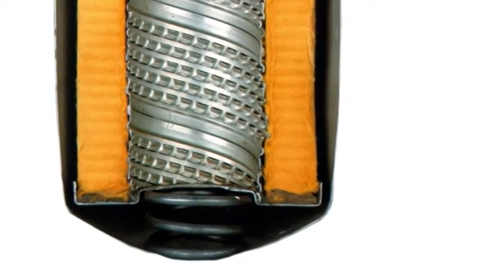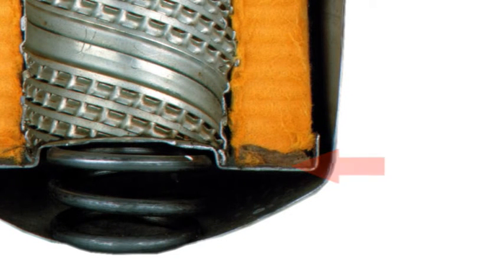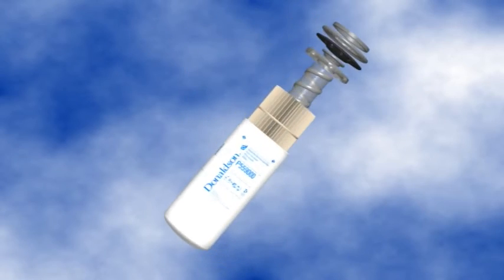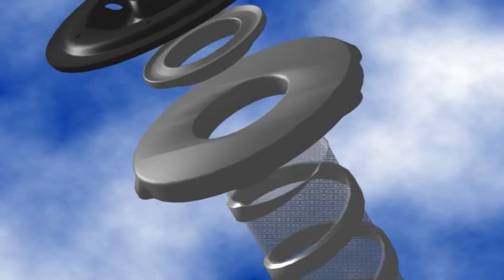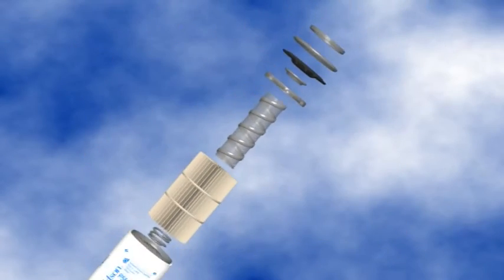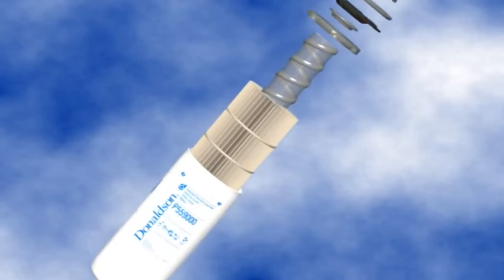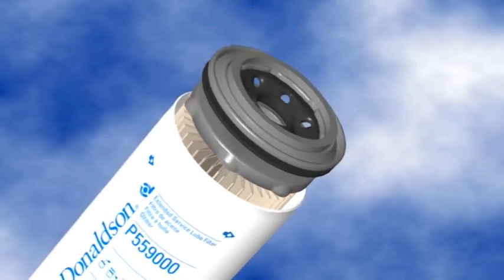Another no-leak precaution is the tab on the top end cap of the filter element. These tabs prevent the inner element from going off-center in the housing. This prevents leaks and unfiltered fluid bypassing the filter.